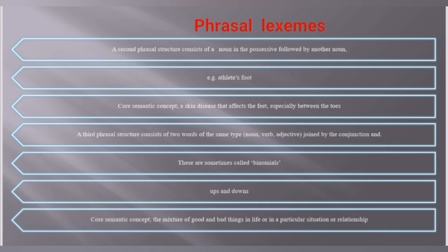A second phrasal structure consists of a noun in the possessive followed by another noun — for example, 'athlete's foot,' which refers to a skin disease that affects the feet, especially between the toes. A third phrasal structure consists of two words of the same type — noun, verb, or adjective — joined by a conjunction. These are sometimes called binomials, such as 'ups and downs,' meaning the mixture of good and bad things in life or in a particular situation. That's it for now — hope you enjoyed the lesson. Goodbye.